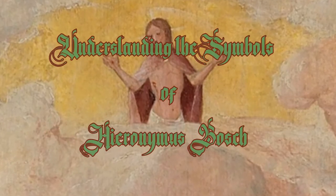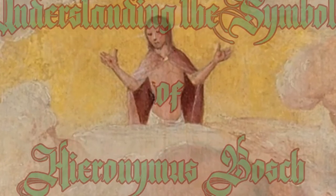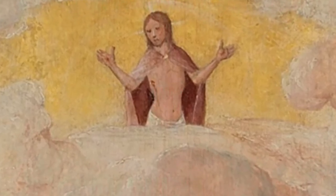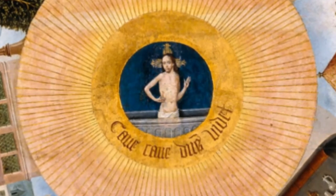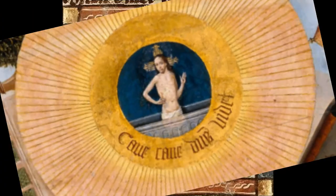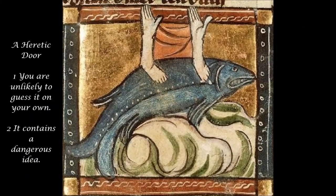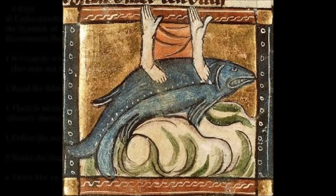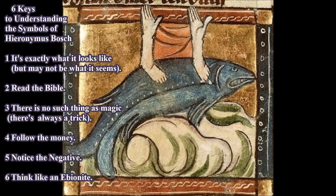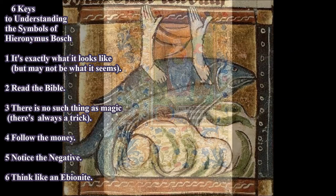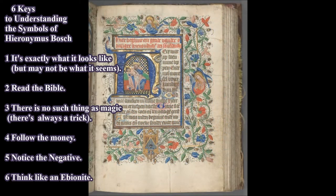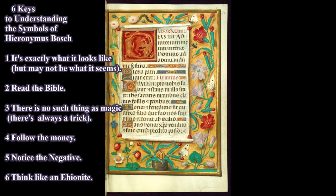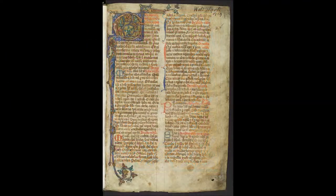Welcome to Understanding the Symbols of Hieronymus Bosch. This is part two of our talk on heretic doors, and we're going to use our six keys for understanding the symbols of Hieronymus Bosch to unlock this door. We'll go through it using a drollery — little illustrations in the margins of illuminated manuscripts — and sometimes they're heretic, like this one.